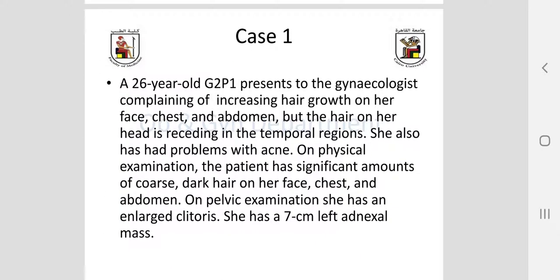First clinical scenario: a 26-year-old, gravida 2 para 1, presenting to the gynecologist complaining of increasing hair growth on her face, chest, and abdomen, while hair on her head is receding in the temporal region. She also has problems with acne. On physical examination, there is significant coarse dark hair on the face, chest, and abdomen — manifestations of androgen excess. On pelvic examination, she has an adnexal mass.